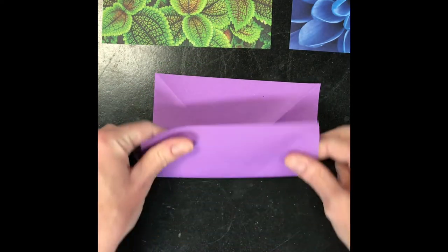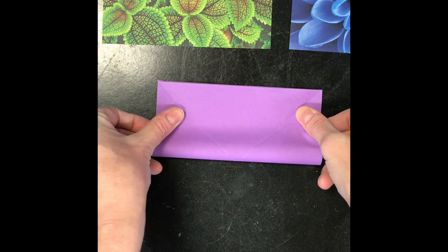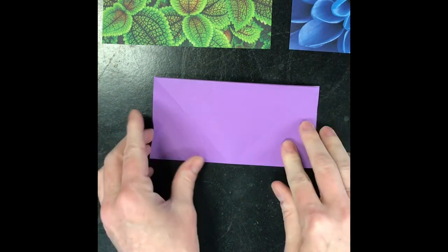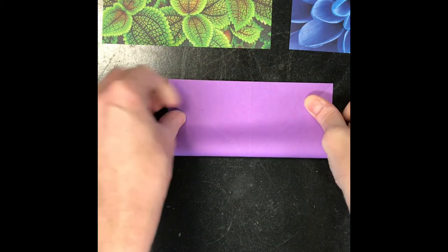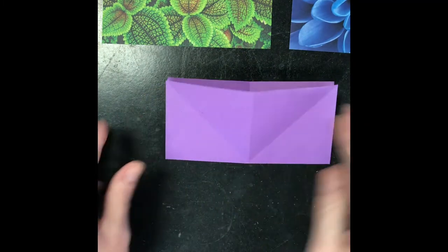Now, with that X kind of poking up in the middle, I'm going to take the bottom line up to the top line, and I'm going to fold it in half and do the same thing again. So then we're going to have kind of a plus sign.